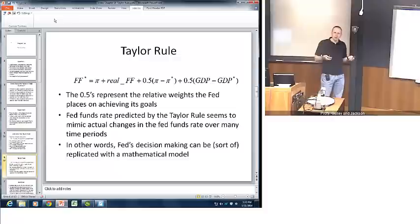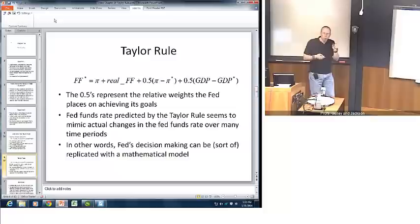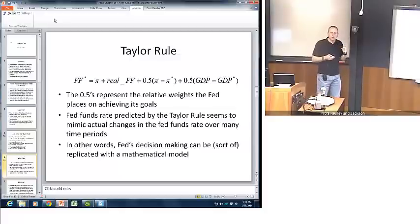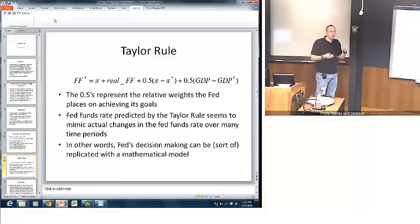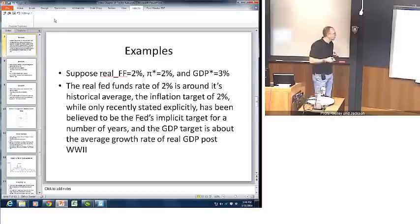I'm going to do a numerical example here in just a second to illustrate how this works out. But first, we need to look at those 2.5 figures there. If you do high-powered math, you discover that if you add 0.5 and 0.5, they add up to one. When that happens in math, you should think of proportions or weights. In other words, the Fed weights proportionally, equally, according to the Taylor Rule, both its inflation target and its GDP target. It turns out that the federal funds rate predicted by the Taylor Rule seems to do a reasonably good job of mimicking or tracking the actual federal funds rate. This means that the Fed's decision making, as complex as it is, can be reproduced, to some extent at least, by a mathematical model.